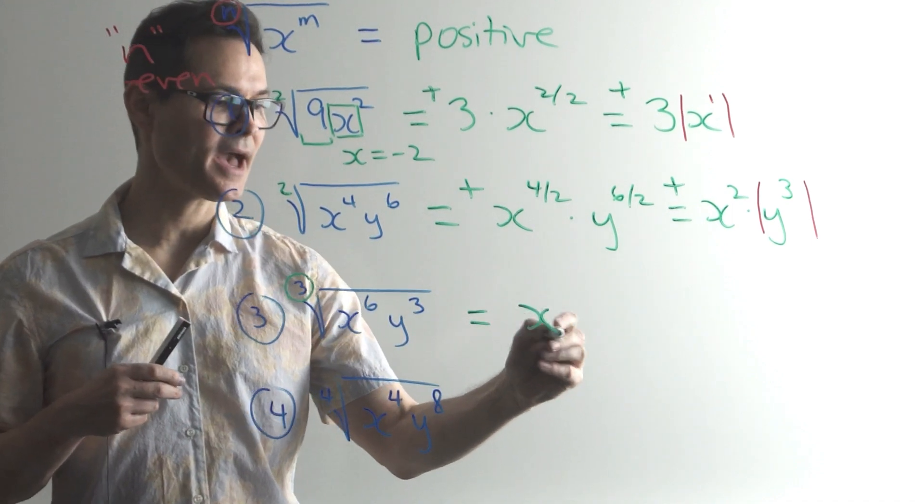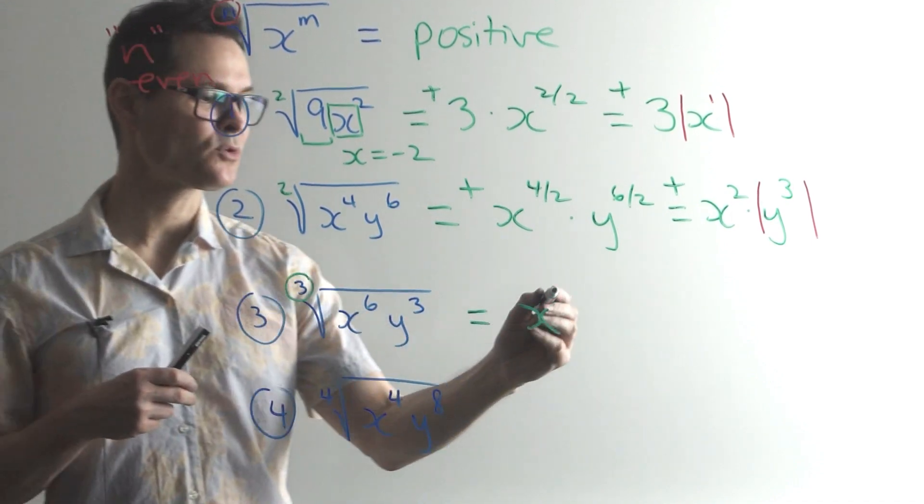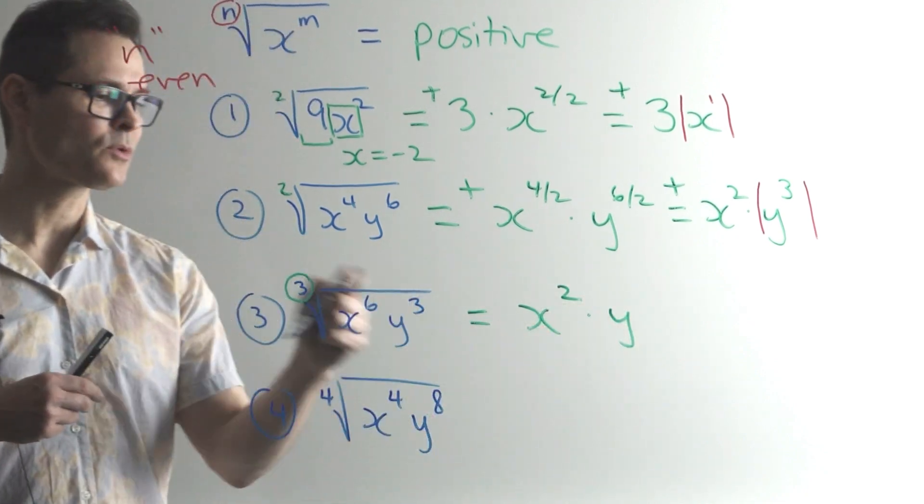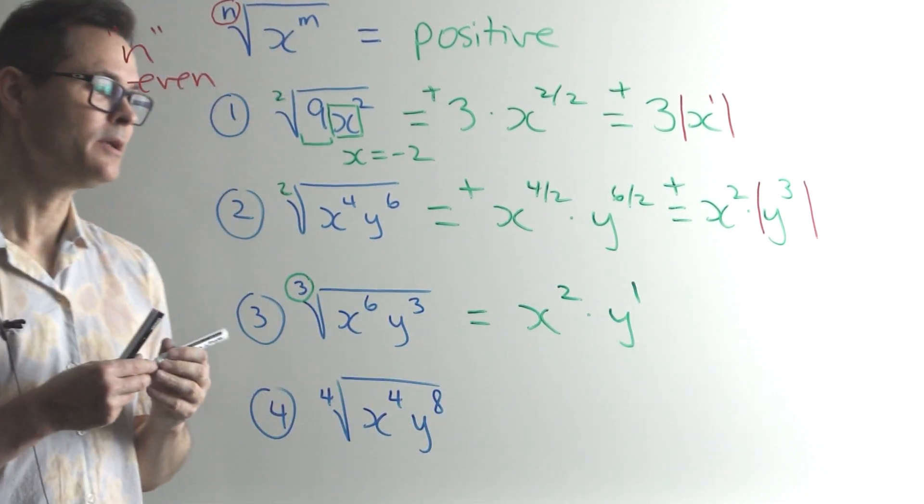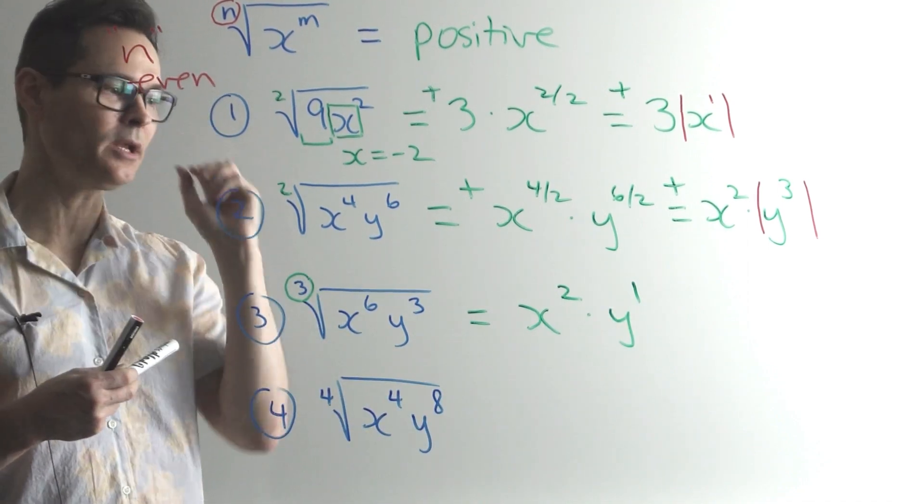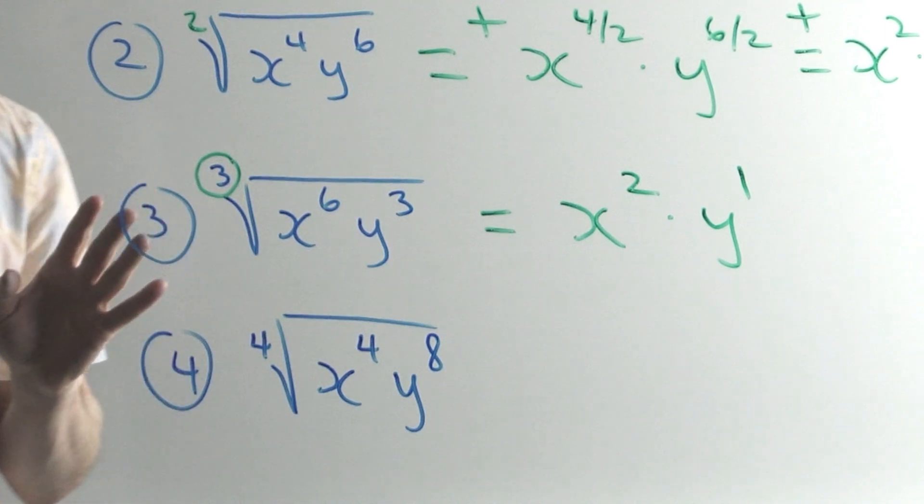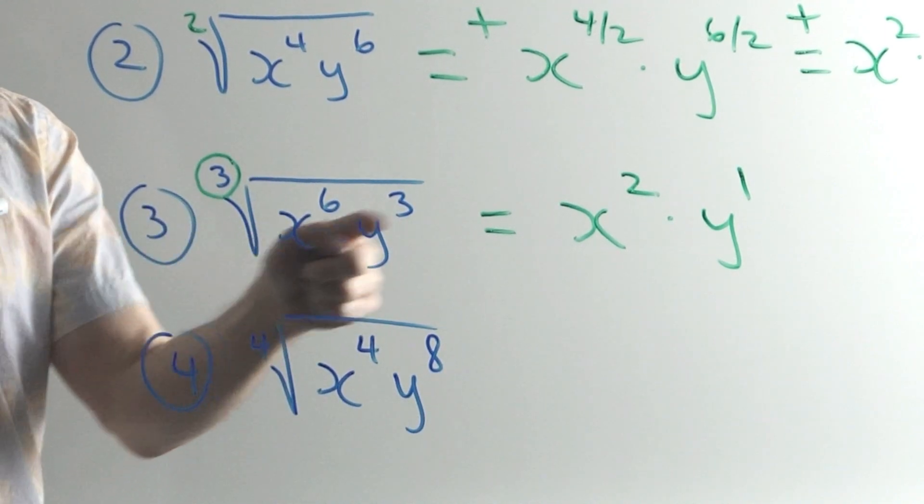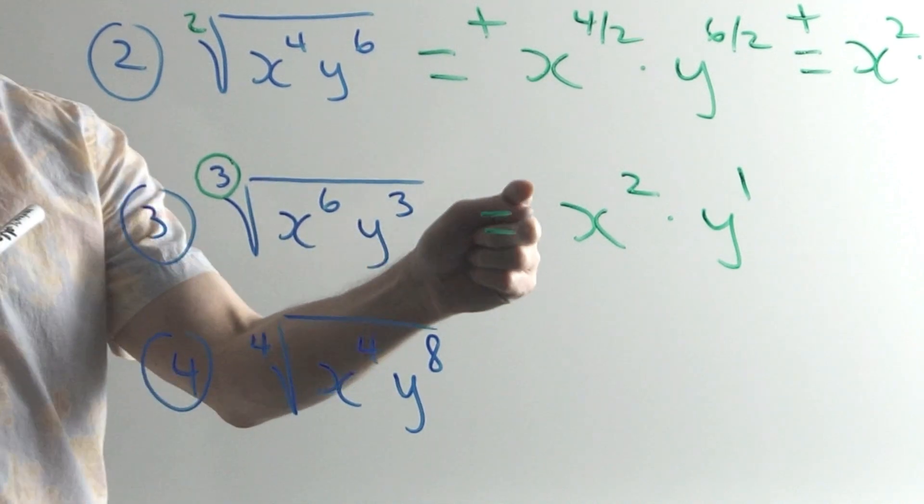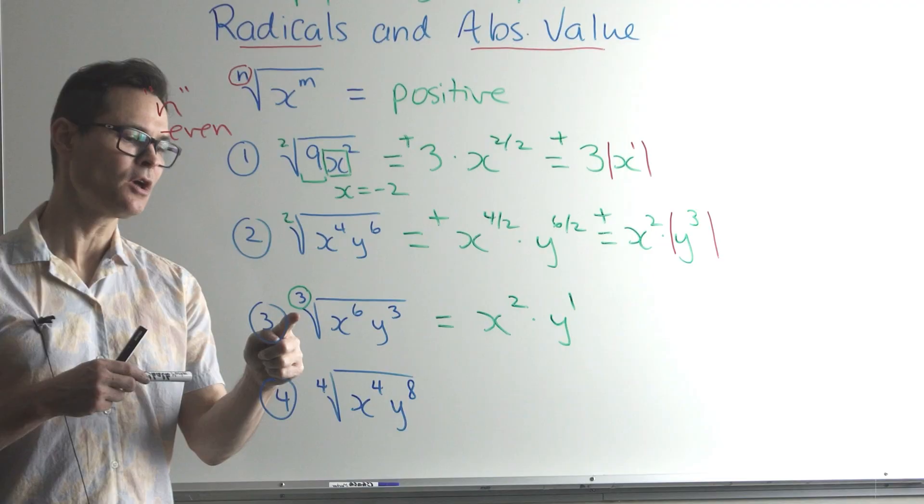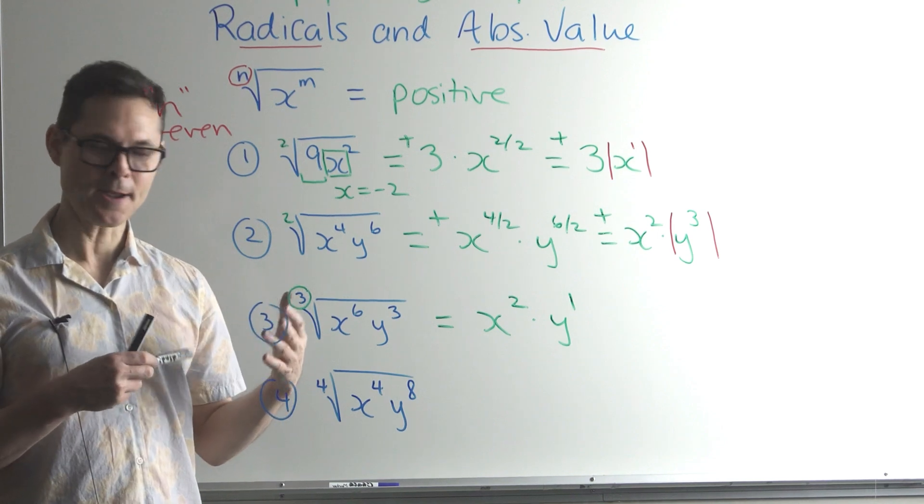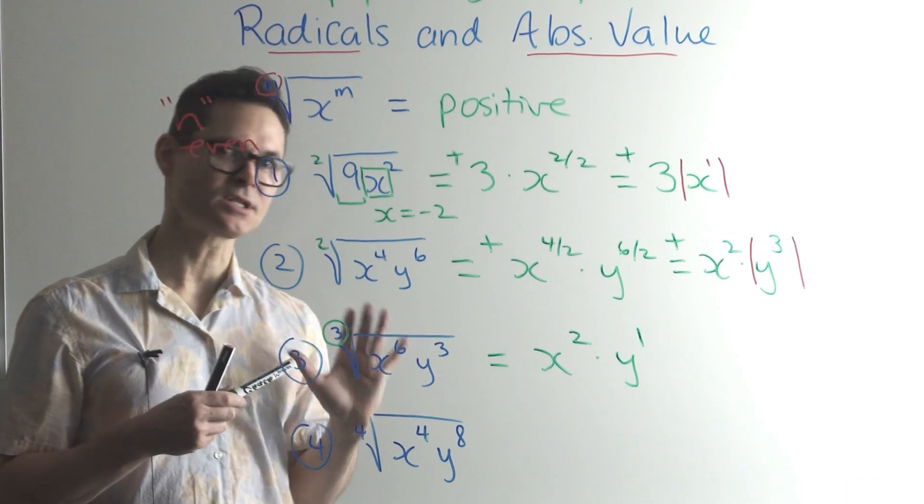So here the answer would be x, 6 divided by 3, which is 2. And then y, 3 divided by 3, which is 1. Now, even though y is being raised to an odd exponent, you don't want to put the absolute value here. Because when you take the cube root of a number, you can get a negative value. So we don't try to ensure positiveness in our answer for indices that are odd. So you leave it just like that.